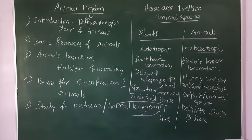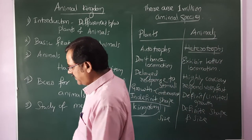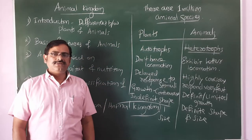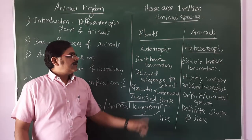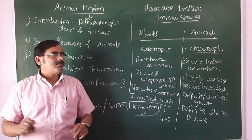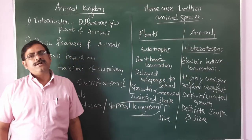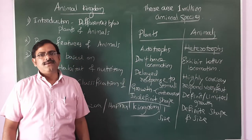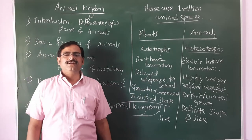These are the few basic differences between plants and animals — a few introductory points related to the animal kingdom. To recap: there are around one million animals, animals are heterotrophs while plants are autotrophs, plants don't have locomotion like animals do, and animals exhibit better movement, changing place to place.